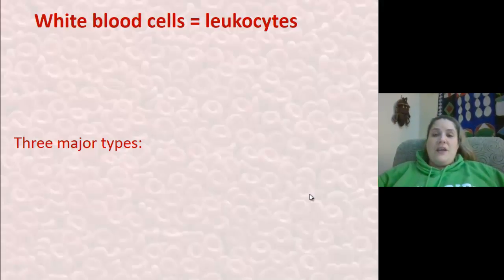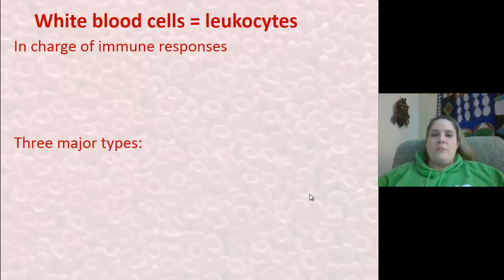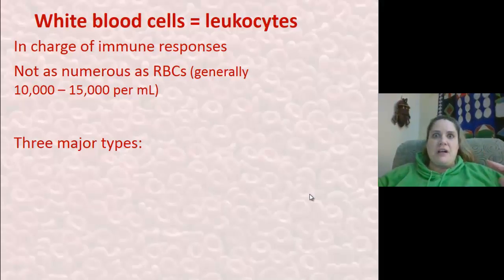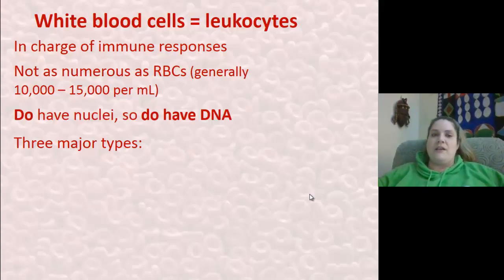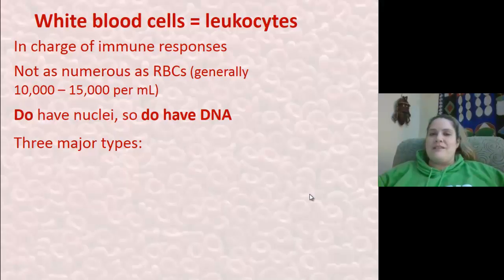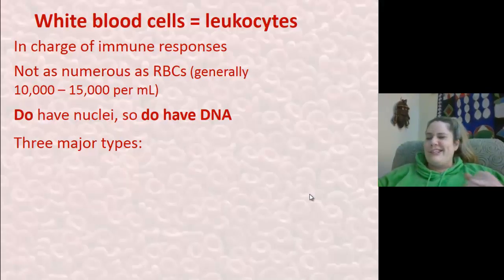You also have white blood cells, and their fancy science name is leukocytes. Leukocytes are white blood cells and their job is that they're in charge of immune responses. So anytime you're getting sick and some invader is coming into your body, leukocytes are the ones that are going to help you out. Leukocytes are not as numerous as red blood cells — generally you're going to have 10 to 15,000 per milliliter, whereas red blood cells are about 5 million. White blood cells do have nuclei, and since they have nuclei, they have DNA. So it's your white blood cells that are going to rat you out when it comes to sharing your DNA. If you leave behind any white blood cells at a crime scene, DNA just got left behind.